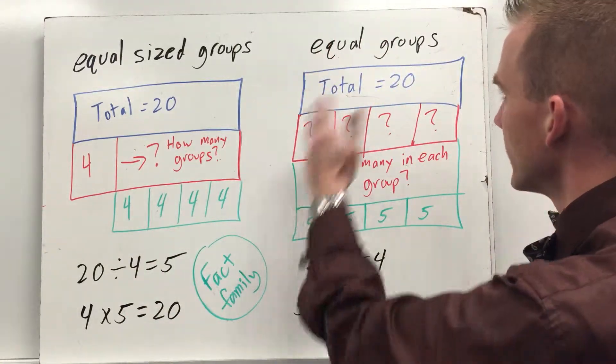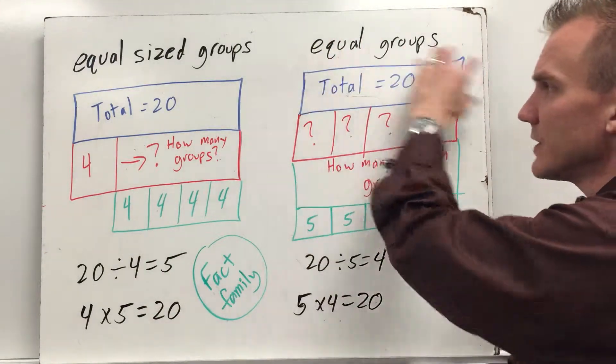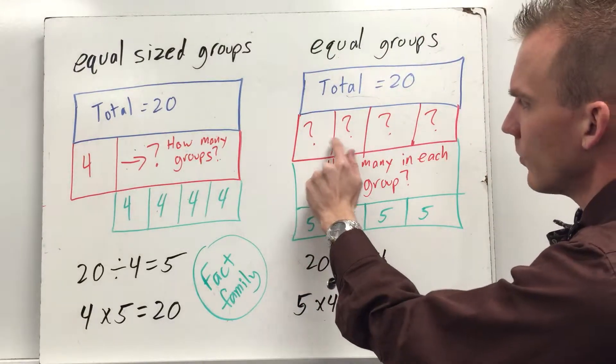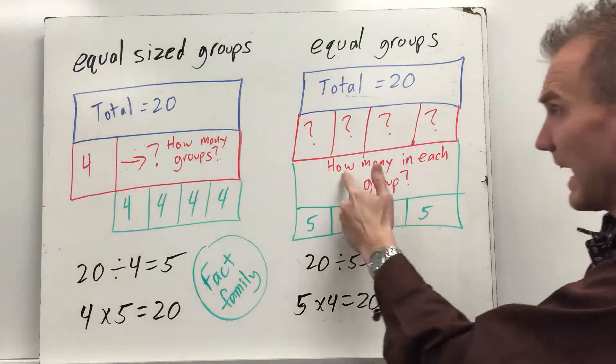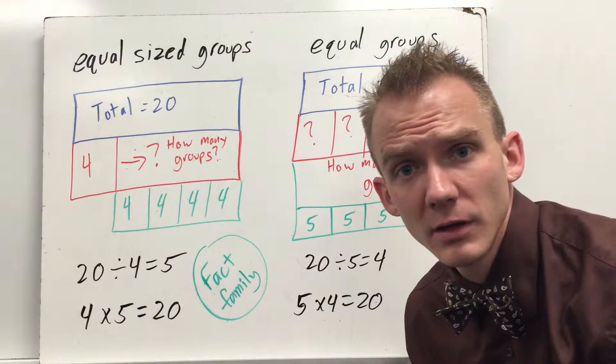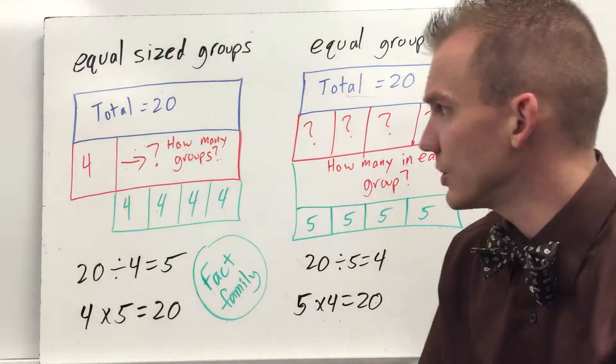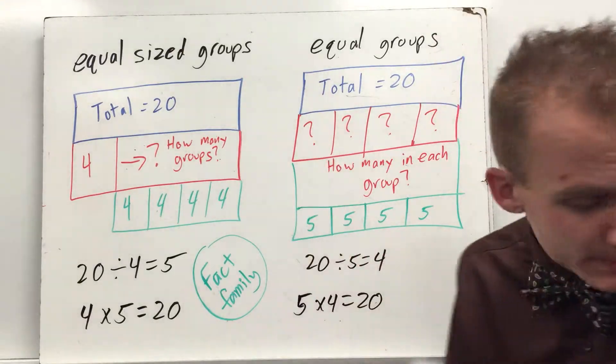But you also have the other way of looking at it in terms of equal groups. You still have the same total of 20 but now look at the difference in my drawing. I have 1, 2, 3, 4 equal groups already drawn out with a question mark. How many is in each group?